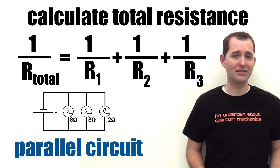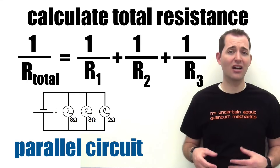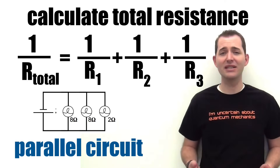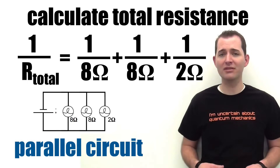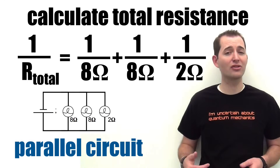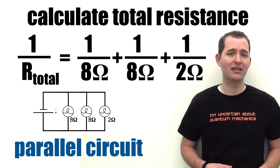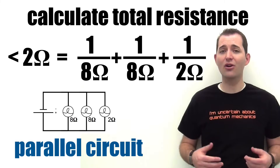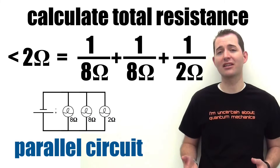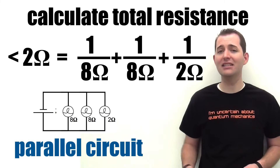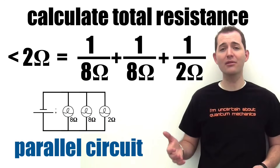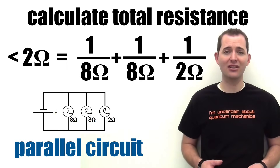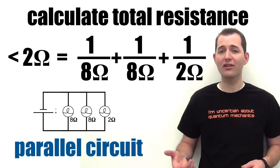To calculate the total resistance in a parallel circuit, we add the reciprocal of the resistance of each resistor and then take the reciprocal of that total. Using the same resistors as in our series circuit, we add 1 over 8 ohms plus 1 over 8 ohms plus 1 over 2 ohms and then take the reciprocal of that value. This gives us a total resistance of 2 ohms for our parallel circuit — a major difference compared to our series circuit which had a resistance of 18 ohms. So as we add more resistors to our parallel circuit, we decrease the total resistance and therefore increase the overall current.